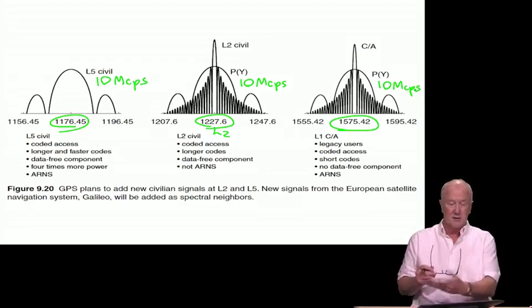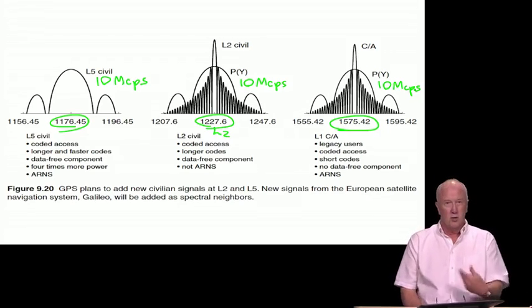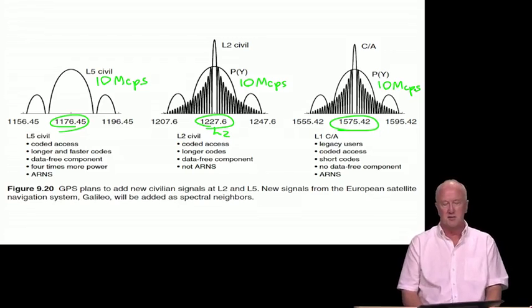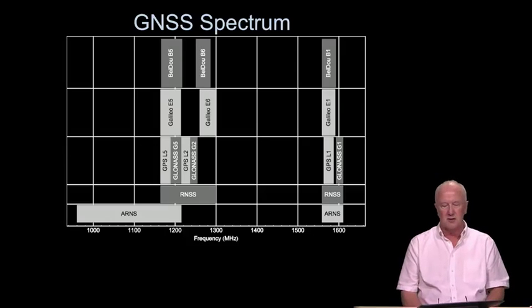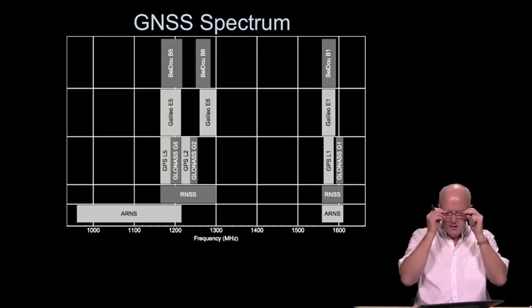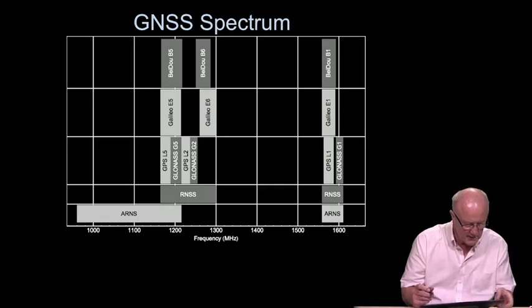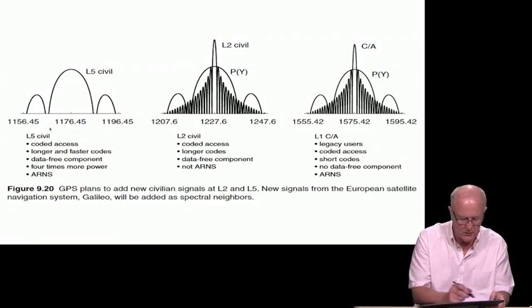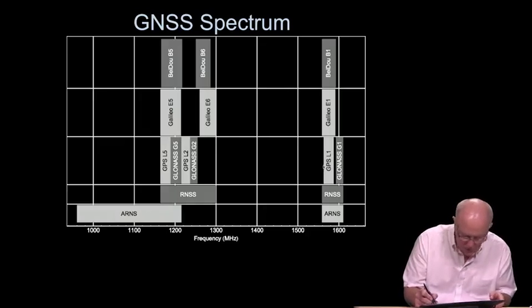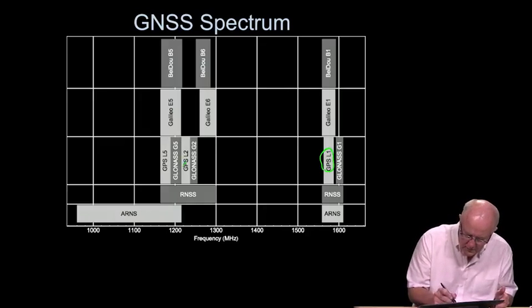So this is almost the entire GPS picture. We're going to come back to it in a little while and add some things that are very current. The overall situation in terms of the international development of satellite navigation is shown here, and the three signals, L1, L2, and L5, are shown here.